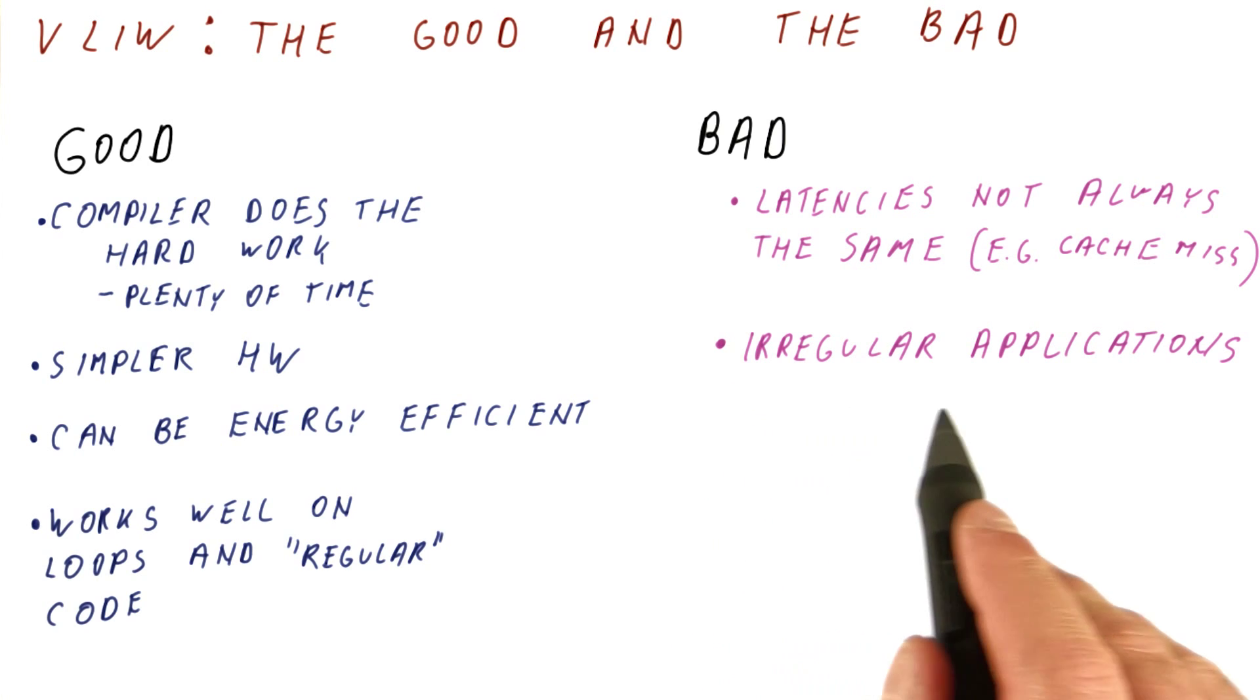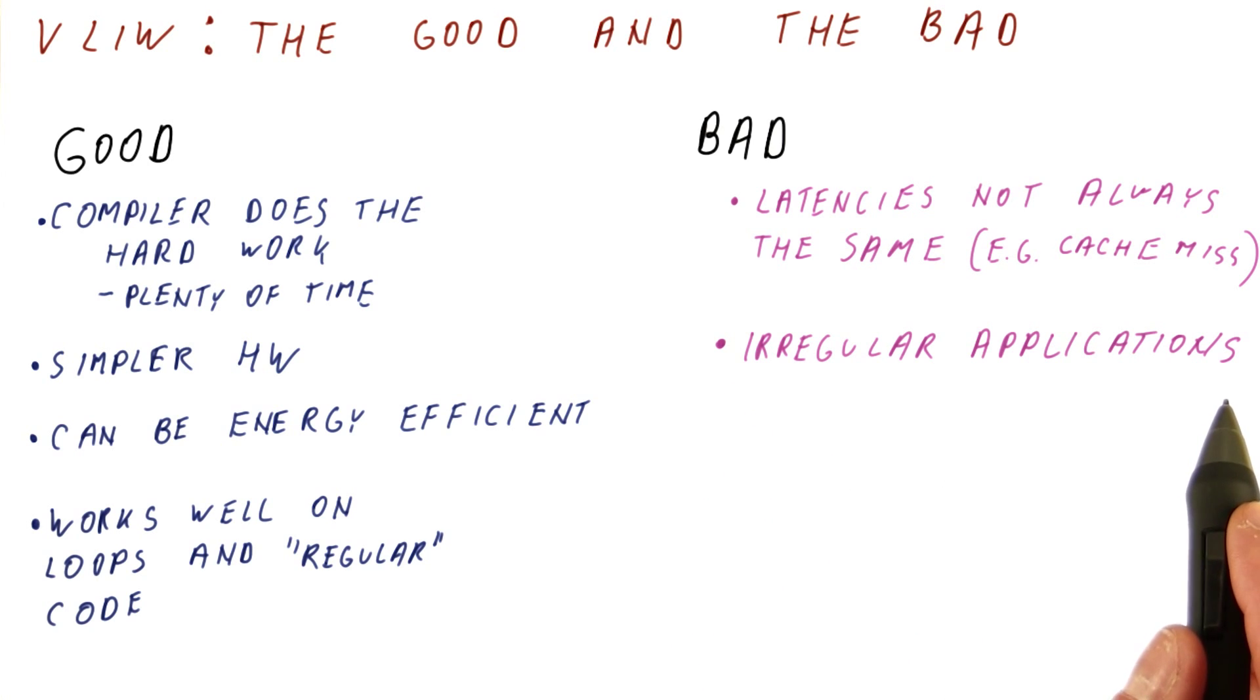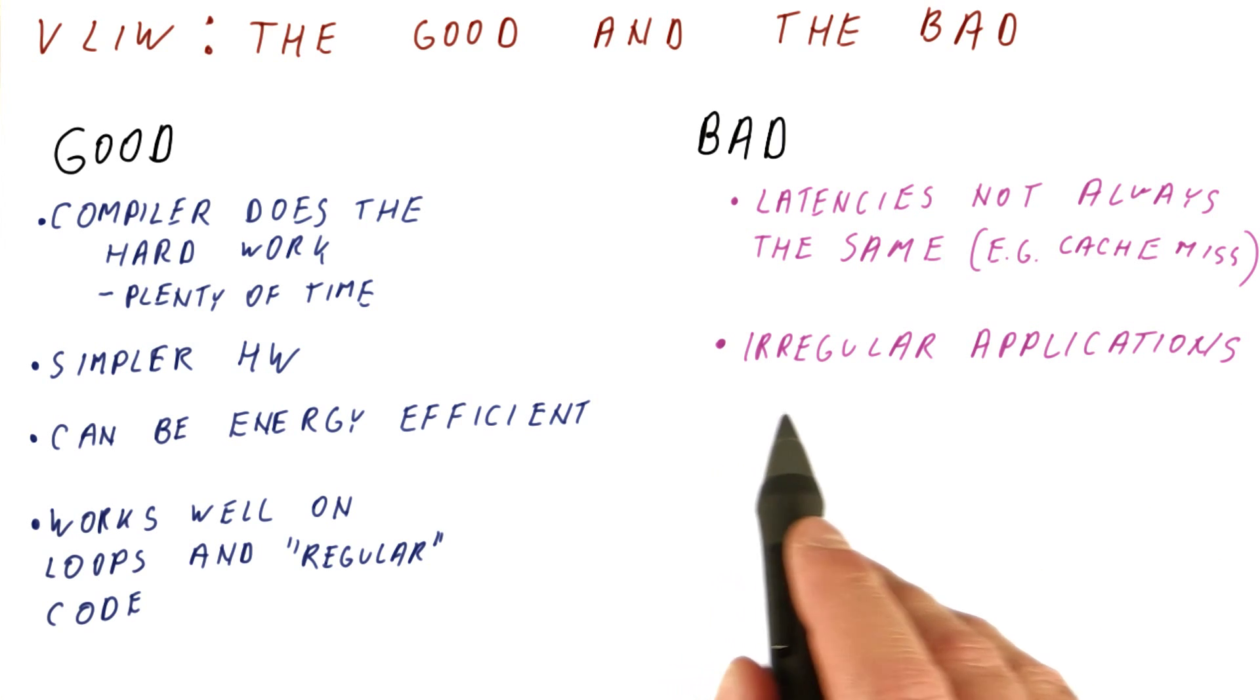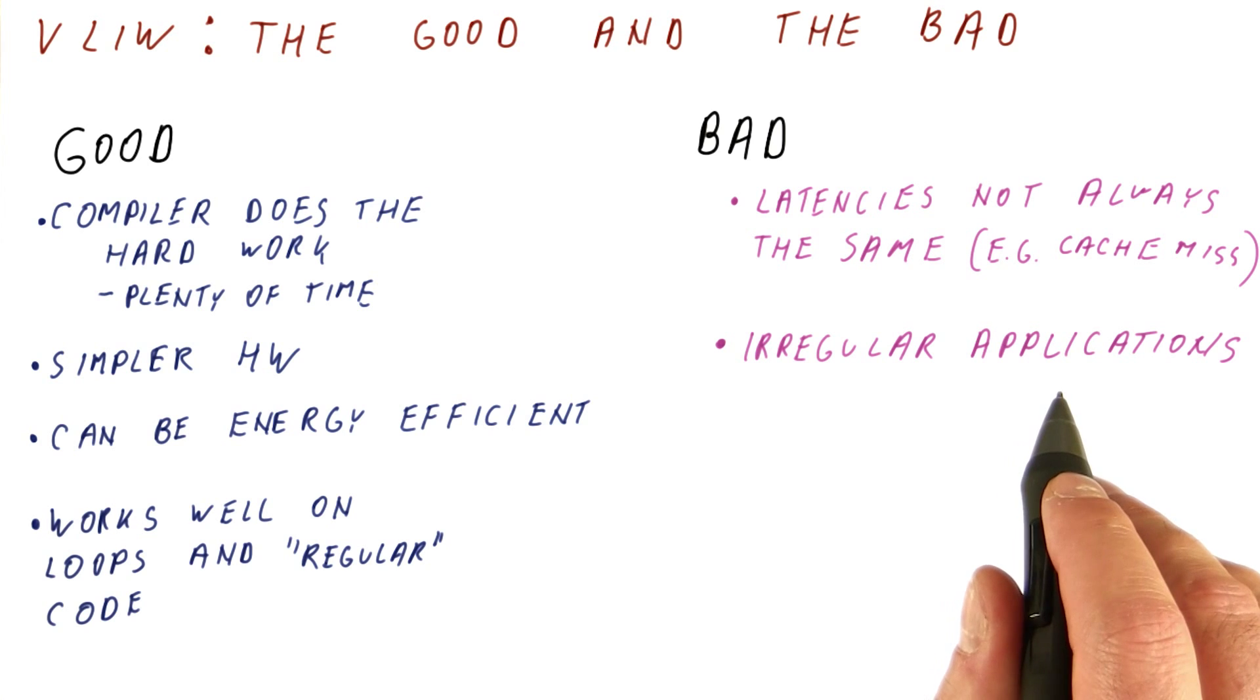Second, many applications are irregular. Almost every application that does a lot of decision making, like for example AI applications, applications that work on pointers or pointer-intensive structures, and so on, are very hard for the compiler to figure out.